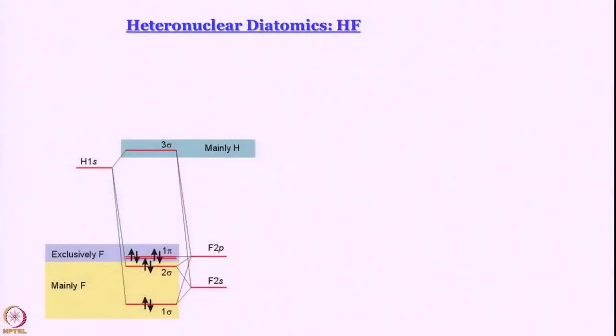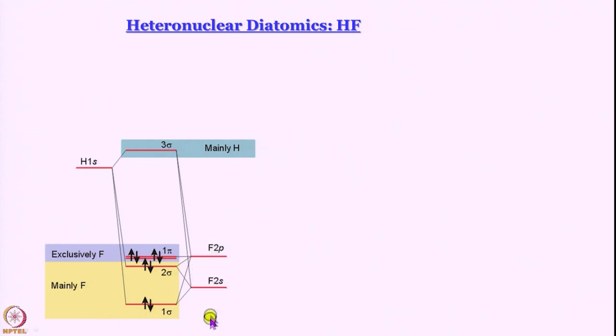Next we are going to discuss heteronuclear diatomics with particular reference to HF, and we will also talk about carbon monoxide. In HF, neglect the molecular orbitals for the moment. On the left hand side we have shown the hydrogen atom 1s orbital. On the right hand side we have shown the fluorine atom 2s and 2p orbitals, and that should raise questions: why is the energy of 2p orbitals for fluorine so much less than the energy of the hydrogen atom 1s orbital?